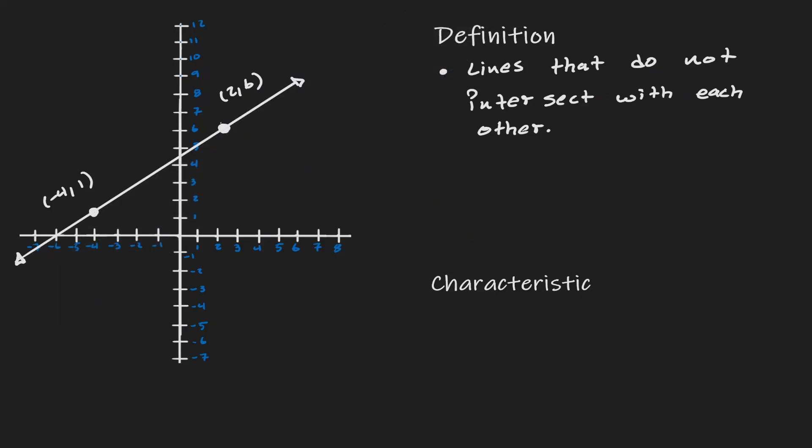So how can we create another line that does not intersect the line that we have created? Let's choose another random point. I'm going to choose negative 1, negative 5. And for both lines to not intersect, they need to have the same direction.